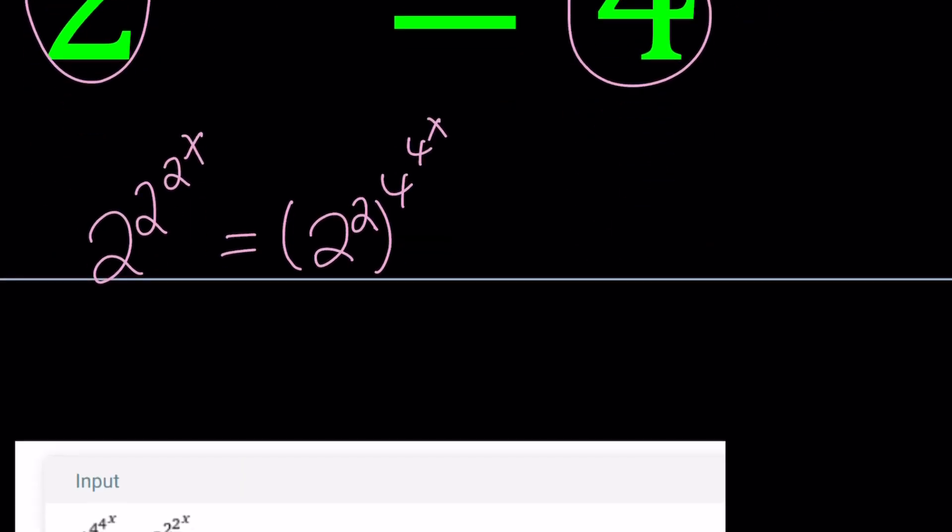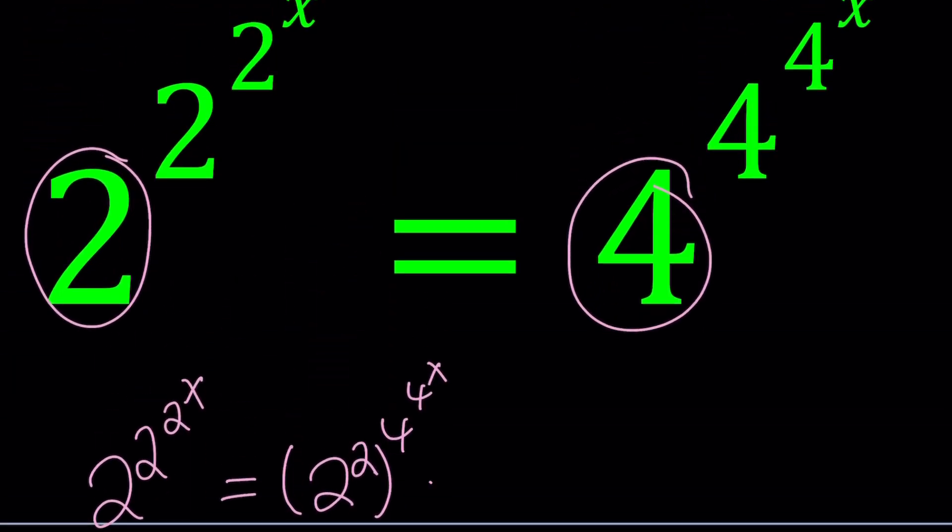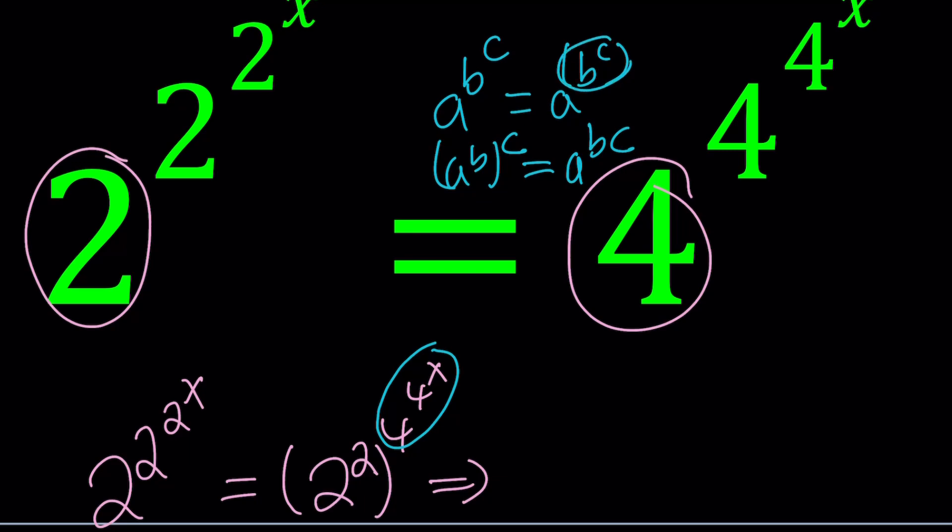Now, the rule tells us that we're supposed to multiply the exponents. Because the whole exponent here is 4 to the power 4 to the power x. So when you write something like a to the power b to the power c, it basically means a to the power b to the power c. Not a to the power bc, because bc and b to the c are usually different things. So these two are different. We are talking about the first one.